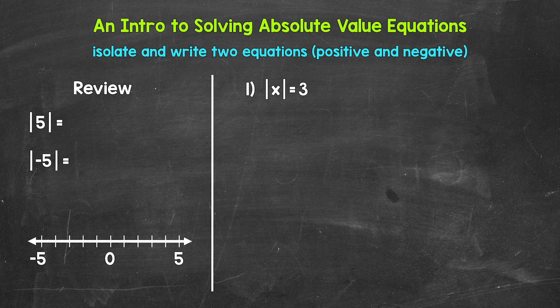Now remember, the absolute value of a number is its distance from zero. So for a quick review, the absolute value of five is five. If we take a look at five on the number line, the distance from zero is five units.